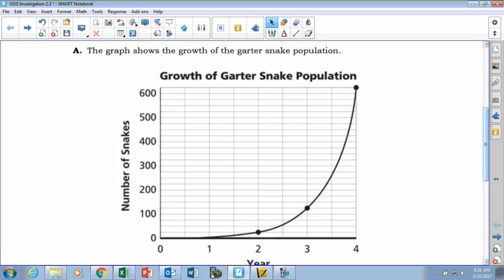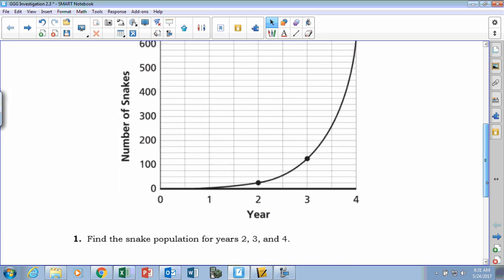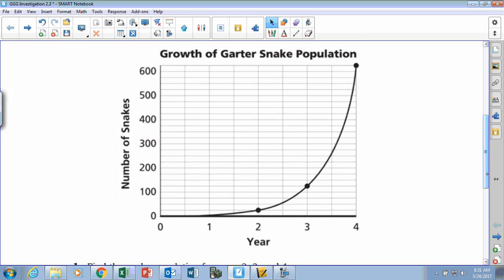Okay, so we got some points on the graph at two, three, and four. So what I want you to take a few minutes on is question number one where it says find the snake population for two, three, and four years. So we're going to give you guys about three, four, or five minutes somewhere in there and see if you can use those points and figure out what's the actual number for years two, three, and four.